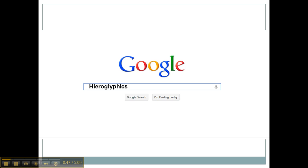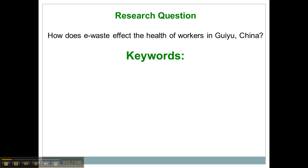So how do you get a keyword? Your keyword comes from your research question. So if my research question was 'How does e-waste affect the health of workers in Guiyu, China?' my keywords will definitely be 'e-waste' and 'health,' because that's really what I'm looking for, and the specific place. I didn't choose 'workers' because usually health means human health, but I could probably put workers in there as well.